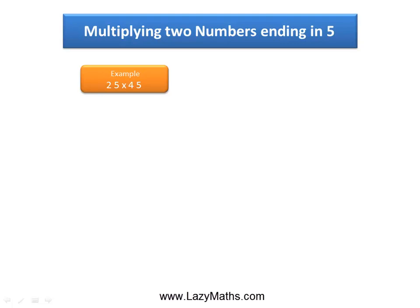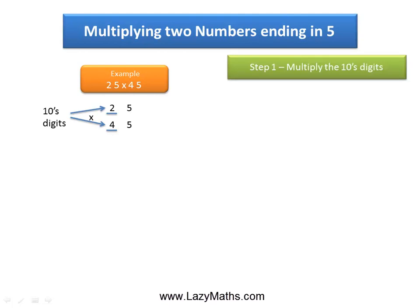Here's an example of multiplying two numbers ending in 5: 25 times 45. As you can see, both 2 and 4 are in the tenth place value. The first step is to multiply these digits, which are in the tenth place value, together. So we multiply 2 and 4 together and we get 8.